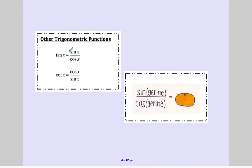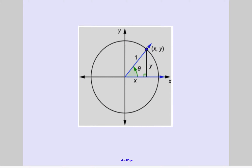Some other trig functions to know: tangent is sine over cosine, and cotangent, since it's the reciprocal of tangent, is cosine over sine. Here's a little joke — sine over cosine gives us a tangerine.